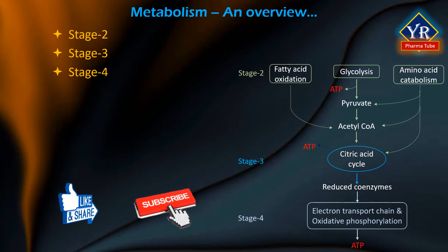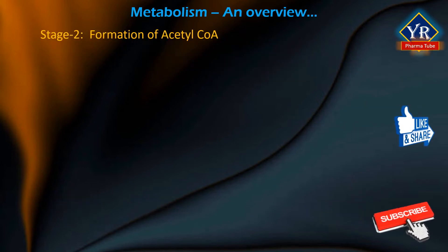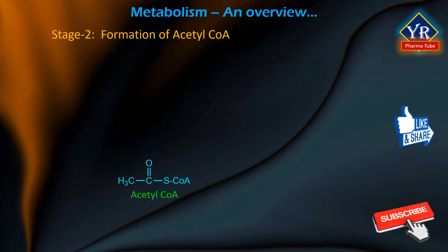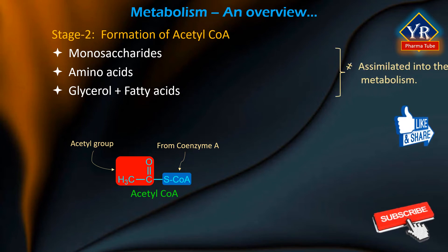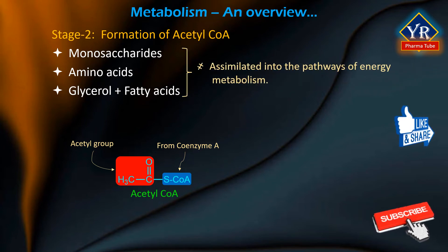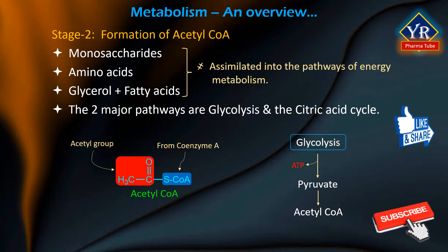Stages 2 to 4 of catabolism. Once small molecules are formed, catabolism continues to break down each type of molecule to smaller units, releasing energy in the process. Stage 2: Formation of acetyl-CoA. The monosaccharides, amino acids, fatty acids and glycerol must now be assimilated into the pathways of energy metabolism. The two major pathways are glycolysis and the citric acid cycle. Sugars usually enter the glycolysis pathway in the form of glucose or fructose, and are eventually converted to acetyl-CoA, which is a form that can be completely oxidized in the citric acid cycle.